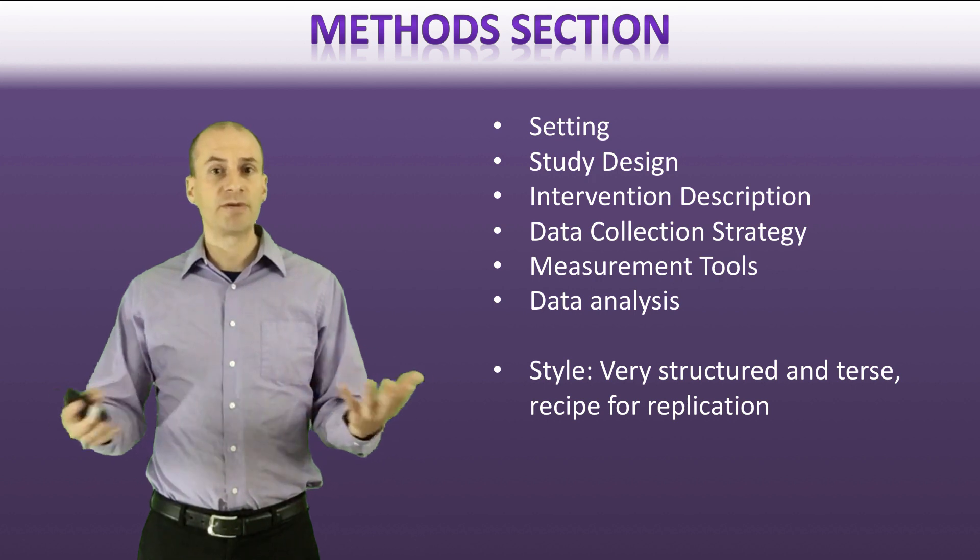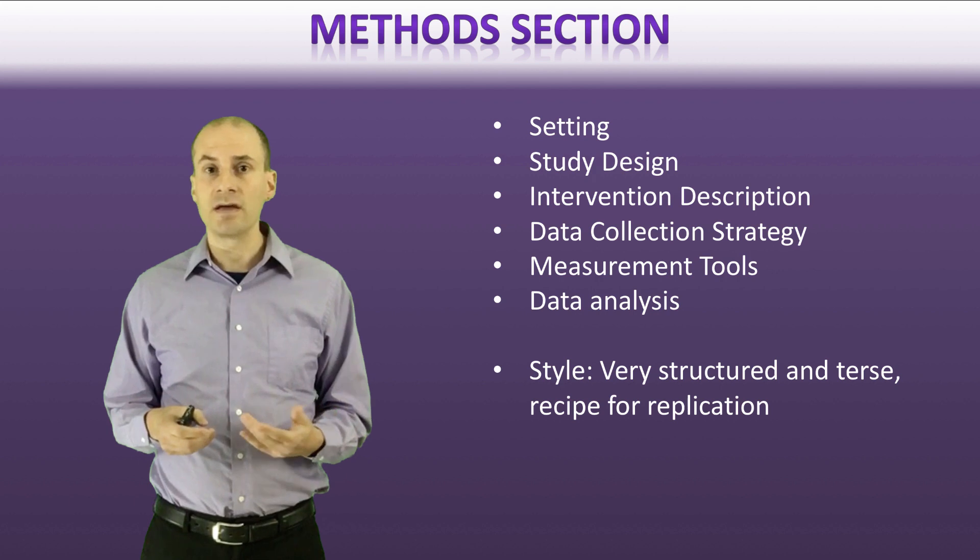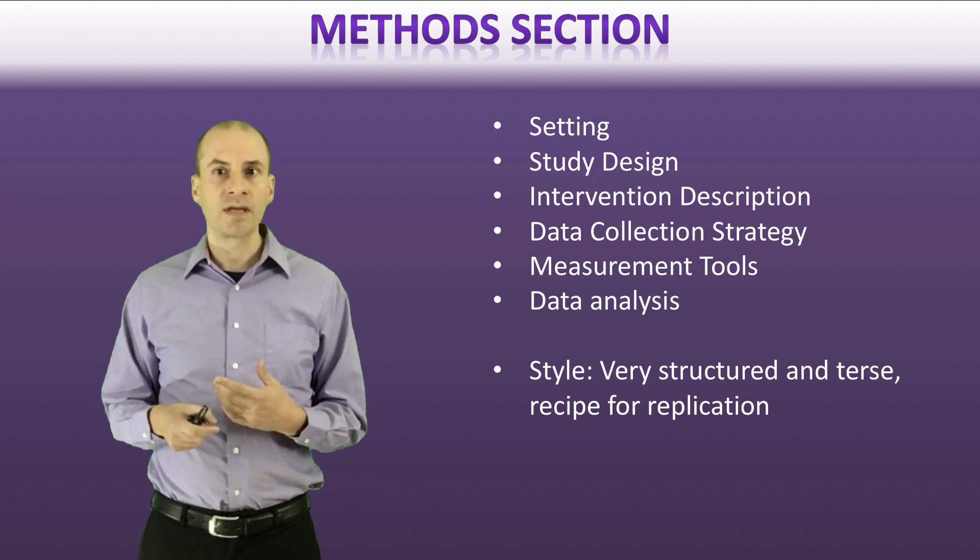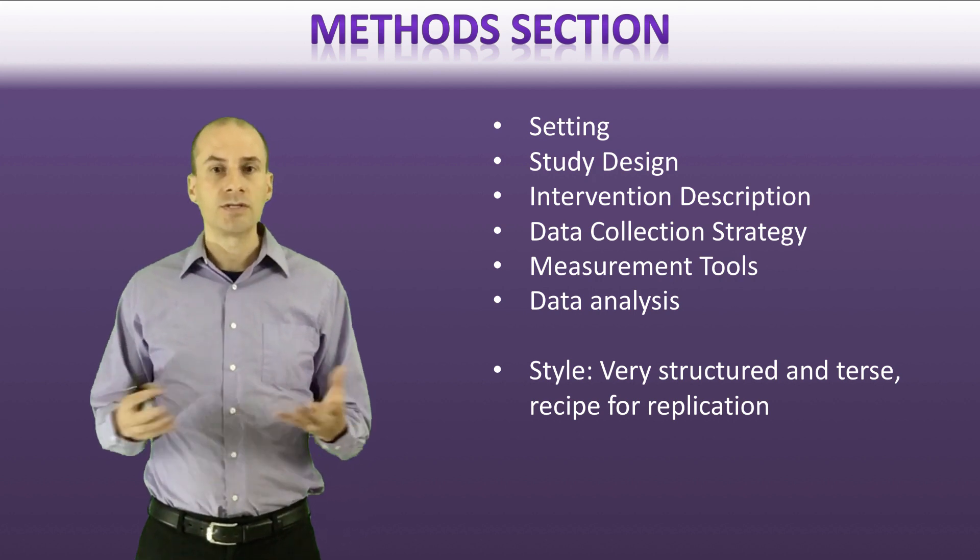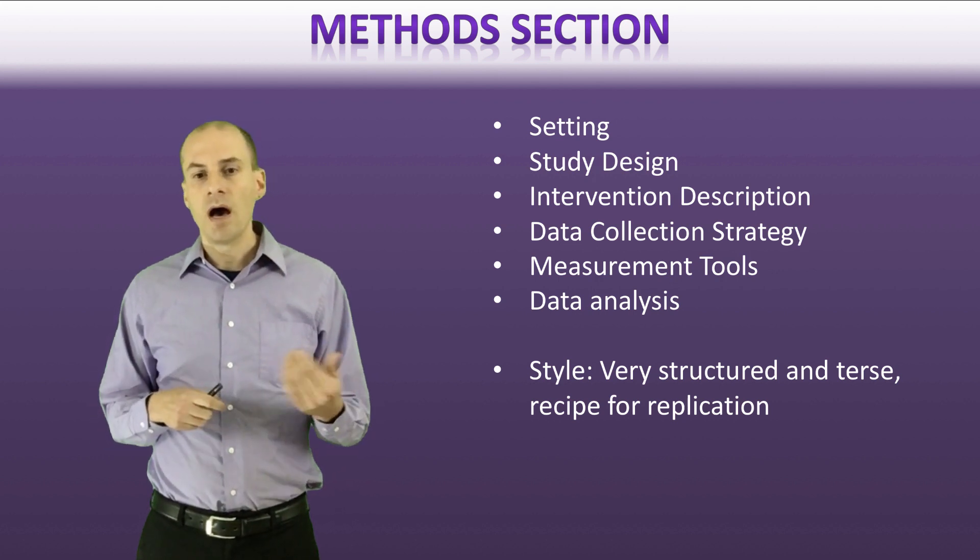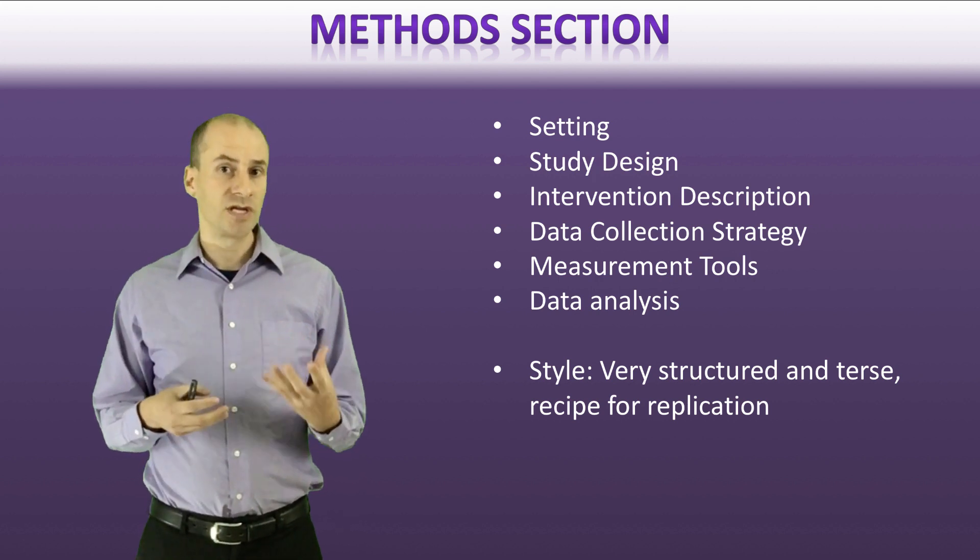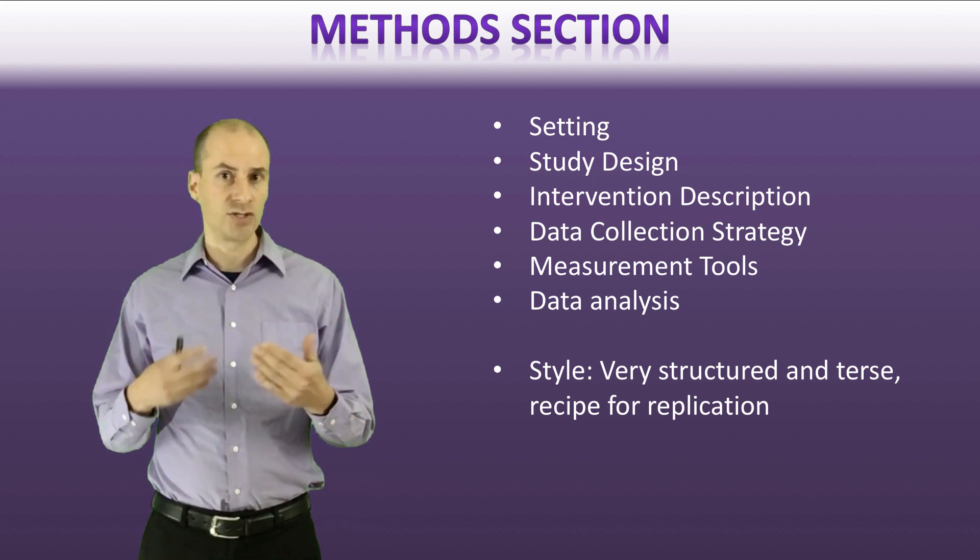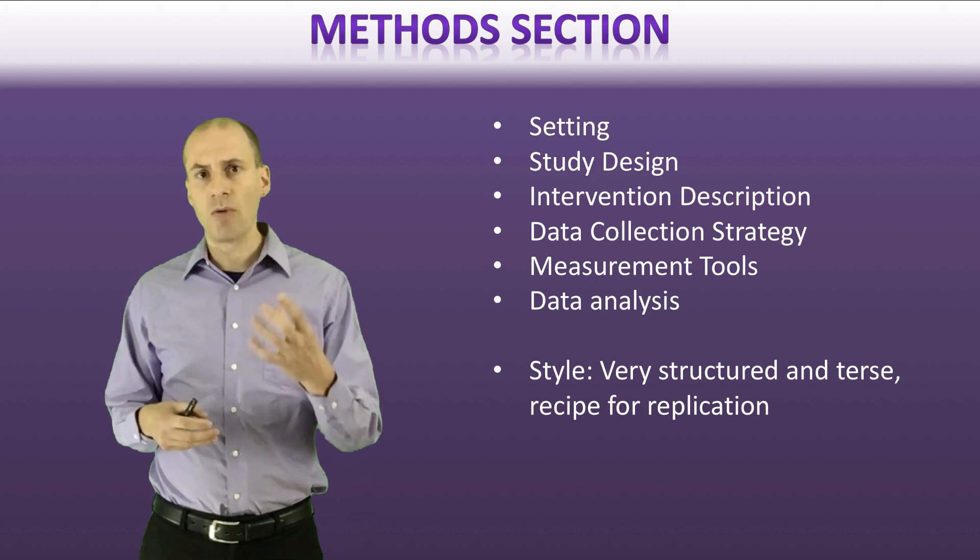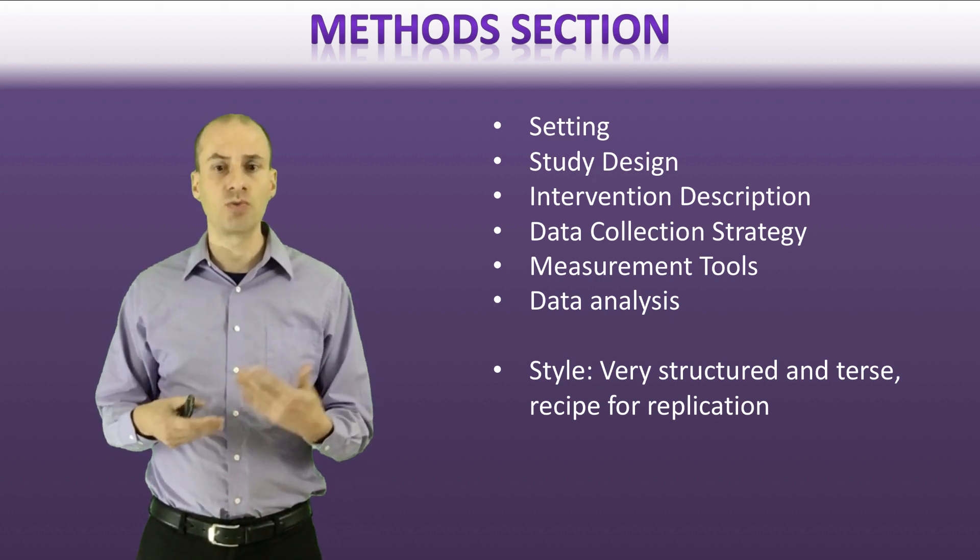Then they might provide some information about what data they collected and what their strategy was for doing that. Did they do a survey? Did they collect biological information? Did they do interviews with people? So those are the different ways that you might get information for the study. And then if there's specific measurement tools - sometimes if you're using a specific validated tool, validated survey component, they'll talk about what those different components are so that you understand what exactly the questions were that were asked.